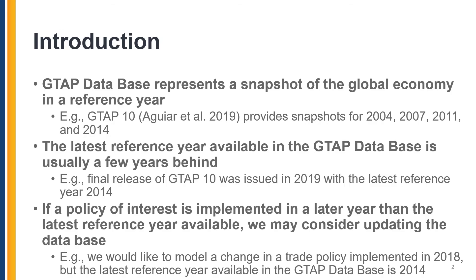The Global Trade Analysis Project database represents a snapshot of the global economy in a reference year. For example, GTAP version 10 database provides a time series of snapshots of the global economy for each of four reference years: 2004, 2007, 2011, and 2014, with 2014 being the latest year added to the GTAP database.